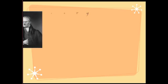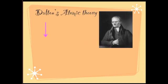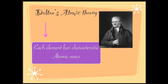Today we are going to learn about a very basic property of all the elements. There was a scientist called John Dalton who once gave the atomic theory, and in his theory he explained about the atomic mass of elements. He said that each element has a characteristic atomic mass.